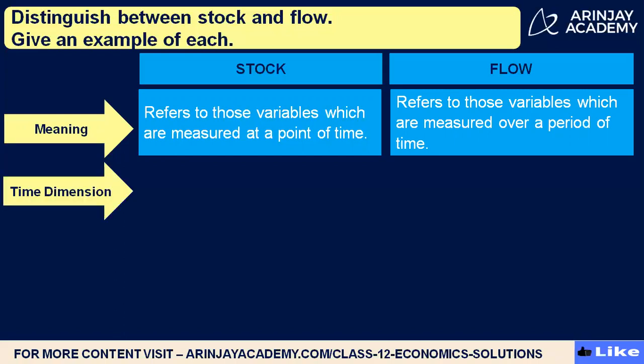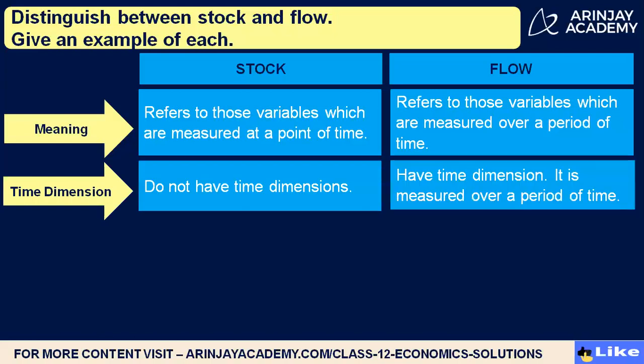Now let's talk about time dimension. Stock does not have a time dimension, because it is measured at a point of time — so in stock there is no time dimension. Whereas in flow, we have a time dimension, because it is measured over a period of time. So stock does not have a time dimension, while flow has a time dimension.